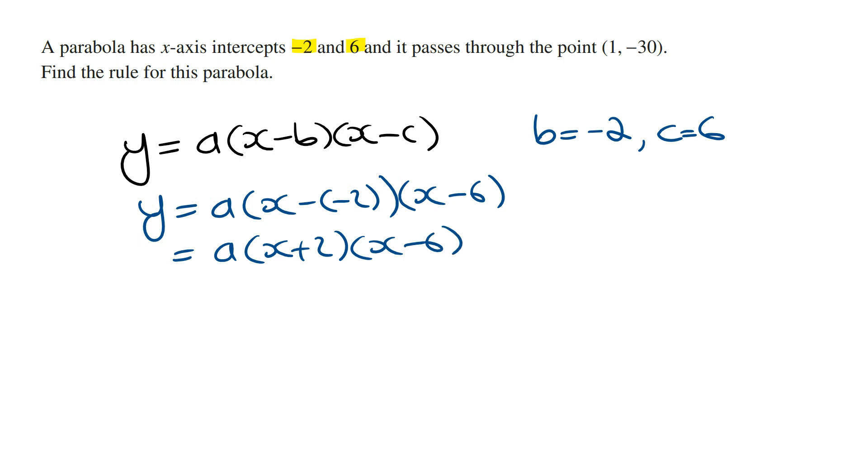Next we need to work out the value of a. To do this we're going to use the point (1, -30). This basically means that when x = 1, y = -30.